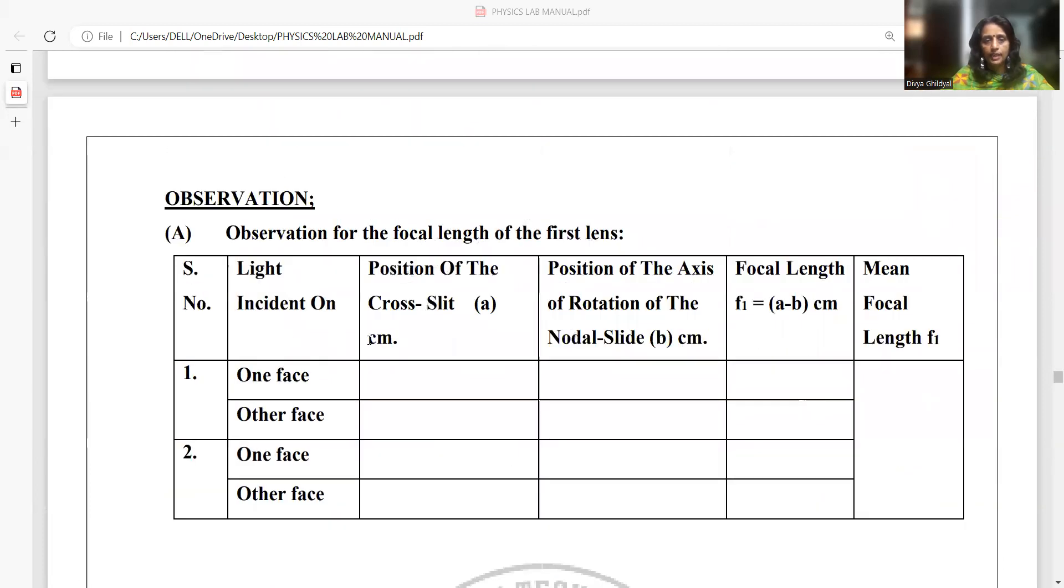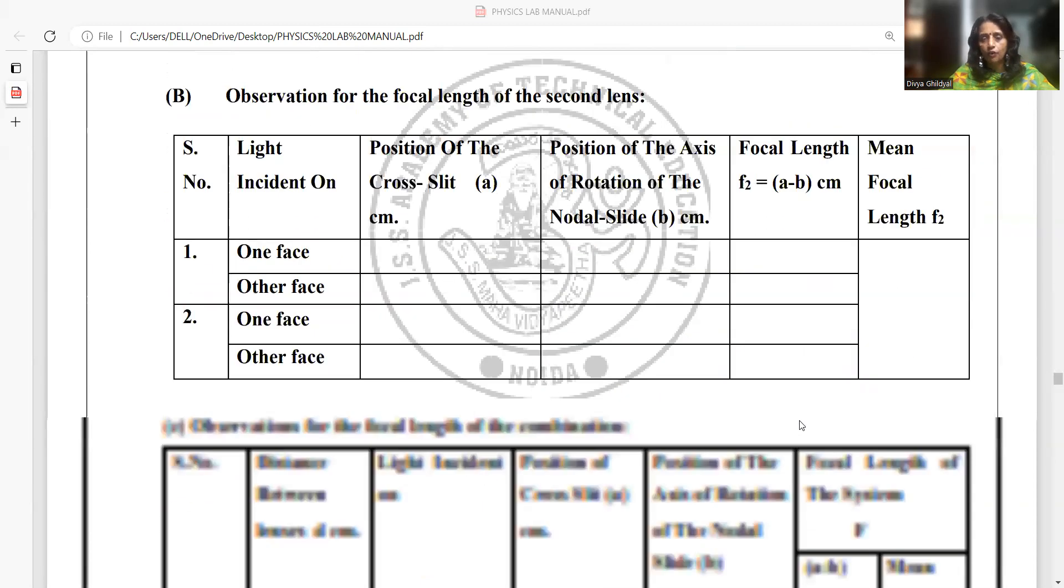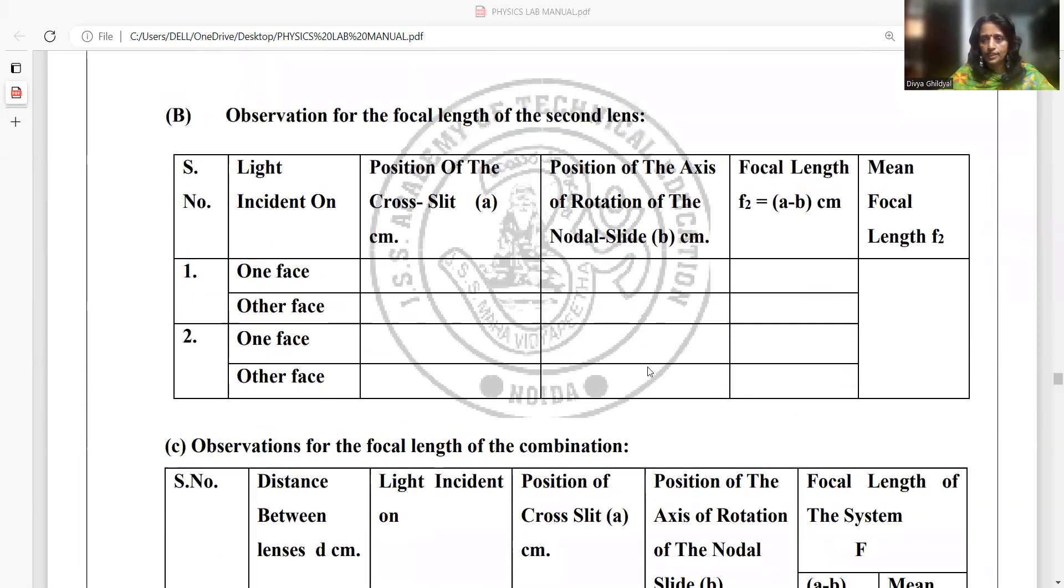In the first table, we will make the light incident on the first face of our convex lens, fix the position of cross slit, focus the lens by shifting it on the nodal slide optical bench, wherever we find the image most sharp, we will take that reading. We will subtract the reading of the axis of nodal slide from the cross slit and get the focal length. Similarly, we will do for the second lens.